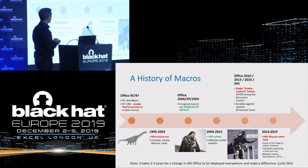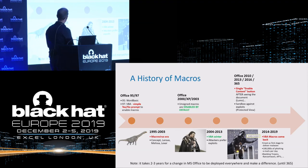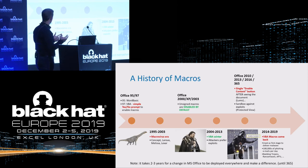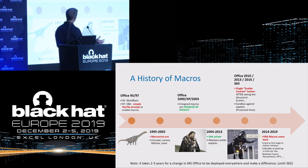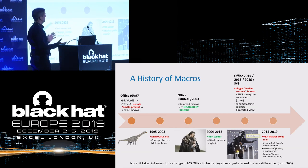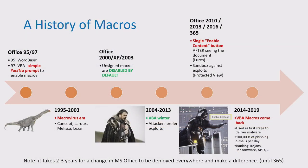Let's start with the history of macros. I see three main areas. First, it started in 1995 with Word Basic, and from 1995 to 2003 we had a lot of macro viruses — maybe the most well-known is Melissa from 1999. Then from 2004 to 2013, for 10 years, we observed what I call VBA winter: there was almost no VBA macro use for malware anymore. Attackers were preferring exploits in Microsoft Office formats or in PDF. The main reason is that in Office 2000 to 2003, macros were disabled by default completely.